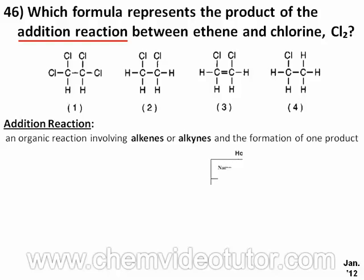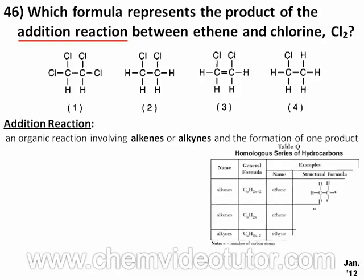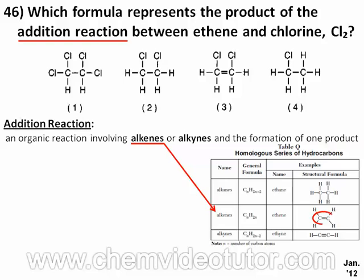Table Q of the chemistry reference table has information regarding alkenes and alkynes. An alkene is a hydrocarbon that contains a double bond between carbon atoms, whereas an alkyne is a hydrocarbon that contains a triple bond between carbon atoms.